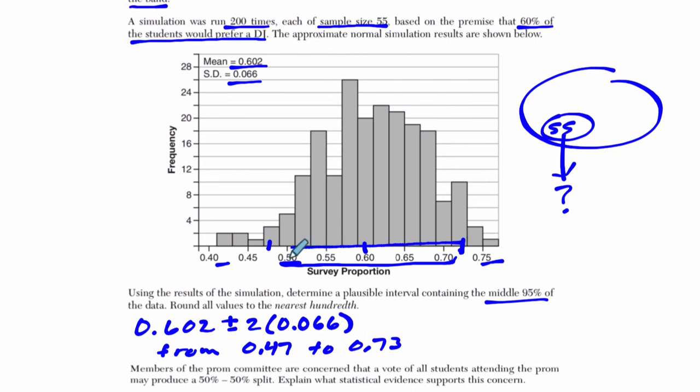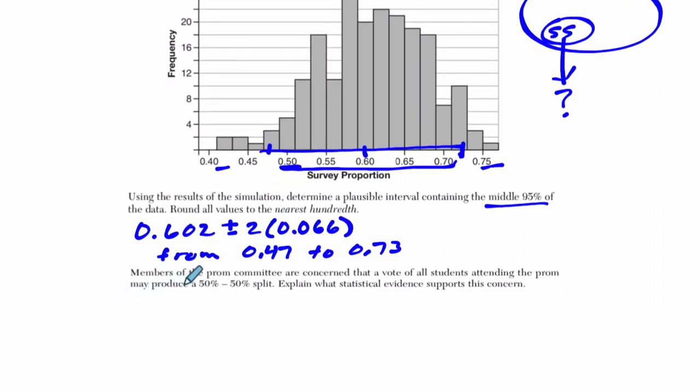And then we can see that it says, the members of the prom committee are concerned that a vote of all students attending the prom may produce a 50-50 split. Explain what statistical evidence supports its concern. Okay, well, in other words, 50% could happen. We see that happening, and it happens about five times, but that's not the significant part. What is significant is that it is within that 95% confidence interval. So you could say, 50% is within the confidence interval. That's one way to maybe suggest that maybe it is reasonable to expect that, because we do see it happening at least five times here in our samples.